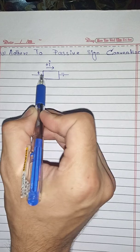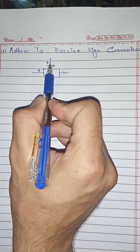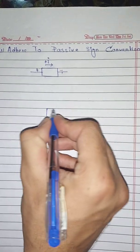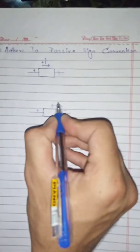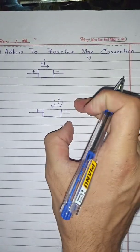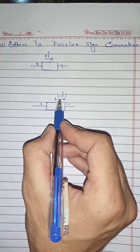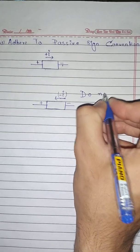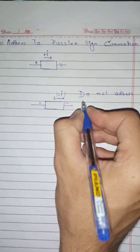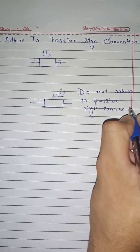Remember that whenever this is the case of adhering to the passive sign convention, the current will be positive. In contrary, there is another possibility where the current enters at the negative terminal and leaves at the positive terminal, so the current direction is taken as negative. This circuit is referred to as not adhering to the passive sign convention.